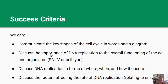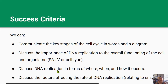By the end of this lesson you should be able to communicate the key stages of the cell cycle in words and a diagram, discuss the importance of DNA replication to the overall functioning of a cell and organisms — in terms of surface area to volume ratio or the type of cell — discuss DNA replication in terms of where, when, and how it occurs, and discuss the factors affecting the rate of DNA replication and relating this back to enzymes.